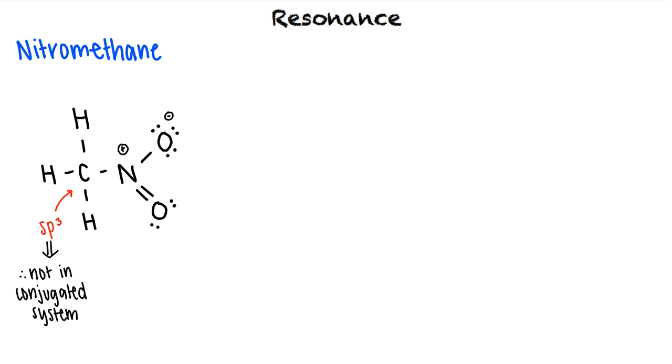Okay, so the only atoms in the conjugated system are the two oxygens and the nitrogen, right? That's right. Now we see that there's a negative charge on one of the oxygen atoms. However, this negative charge could have been drawn on the other oxygen atom.